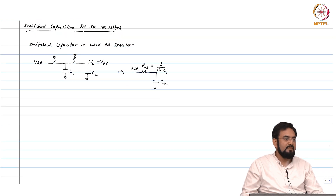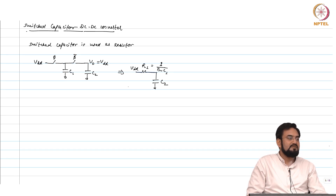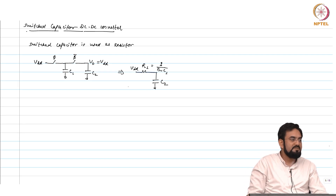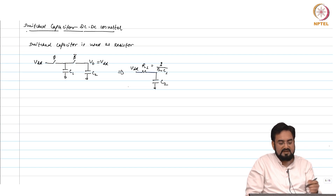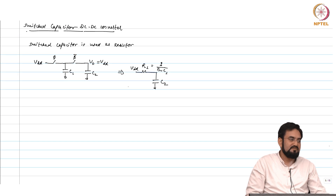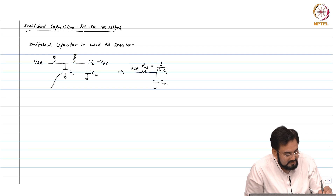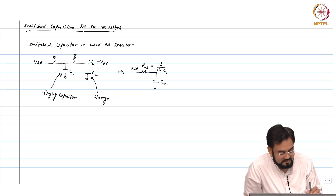The moment I put a load, V_out will start dropping, which means you have to charge the output at a much faster rate, or your capacitor should have more charge stored in it. So you have two options: either fill the output much faster, or increase the size of your capacitor. This capacitor here is the flying capacitor, and this one is the storage — you can also call it the output capacitor.